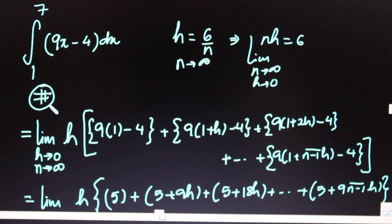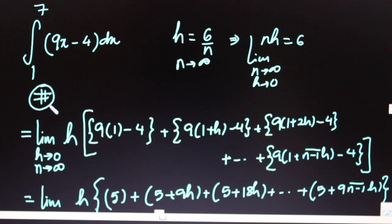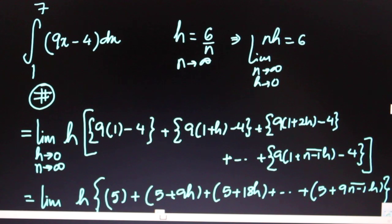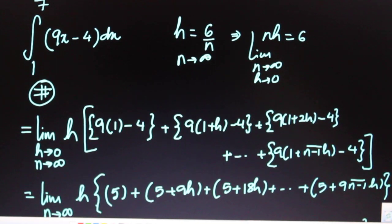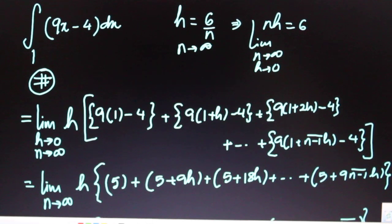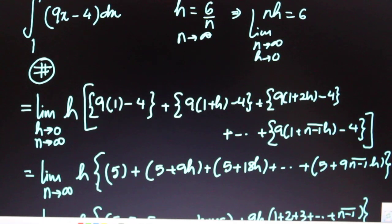9 minus 4 is 5, so the first bracket gives 5. The second bracket gives 5 + 9h. The third bracket gives 5 + 18h. Even two terms are enough to see the pattern, but three terms show the grouping clearly. The final term is 5 + 9(n-1)h. We put a bar over (n-1) to show it is one single term — this notation is important in maths.